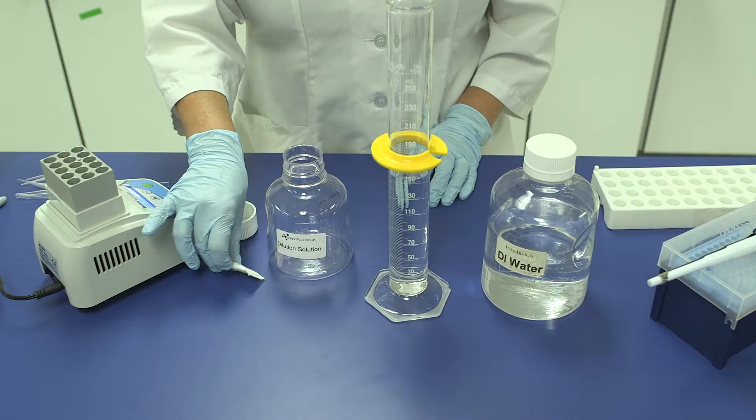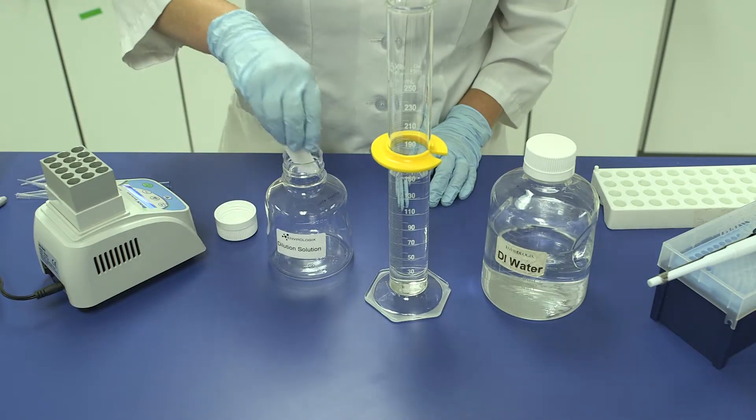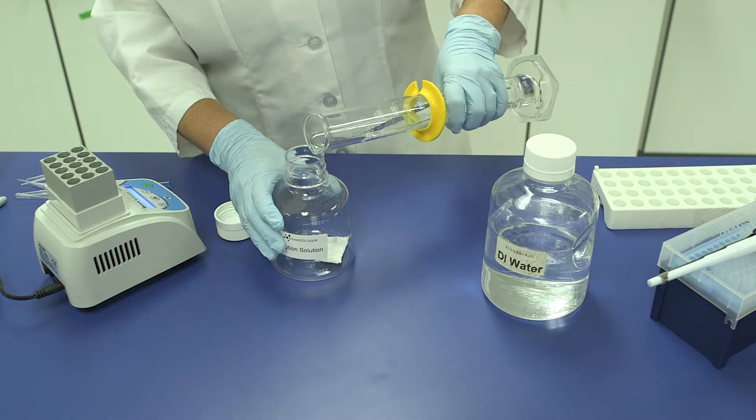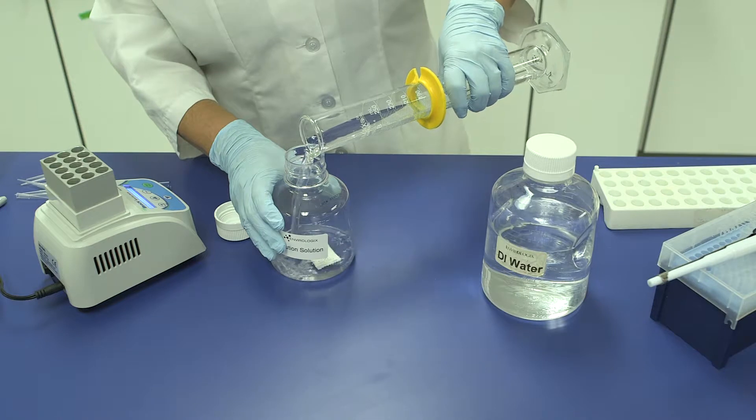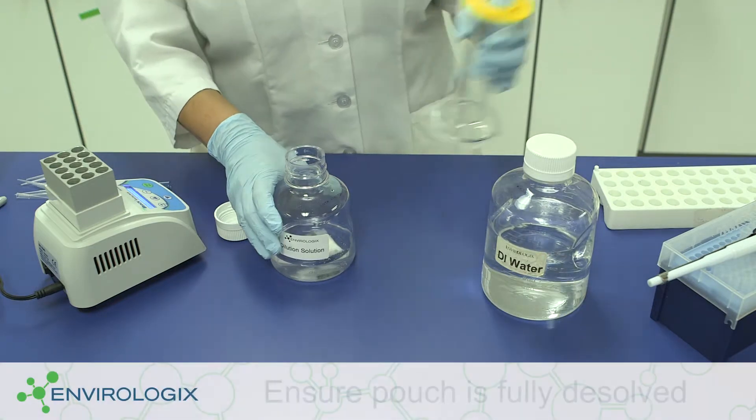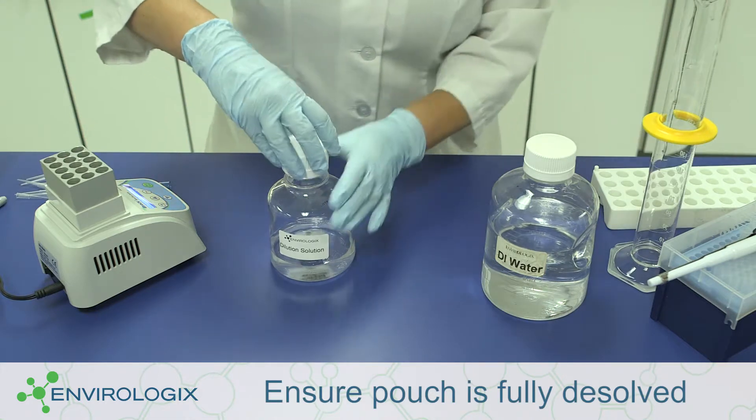Prepare the dilution solution as needed by dissolving one EB-17 pouch in 150 milliliters of distilled or deionized water. This can be stored according to the product insert instructions. Mix thoroughly before each use.